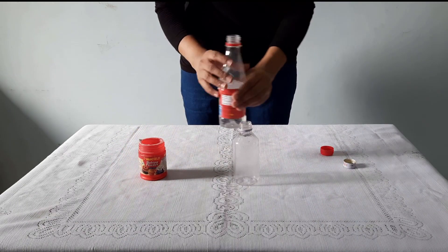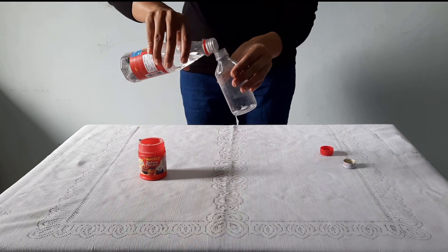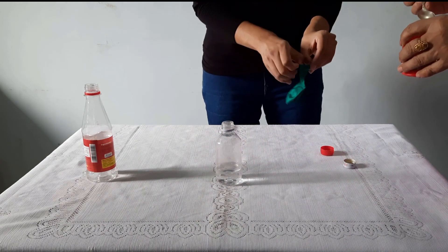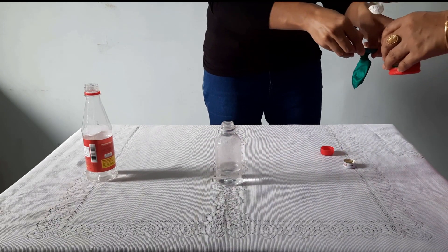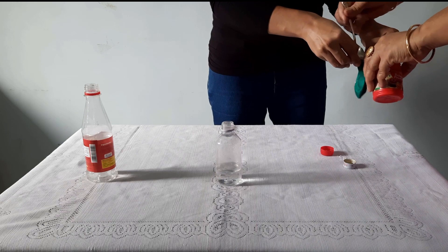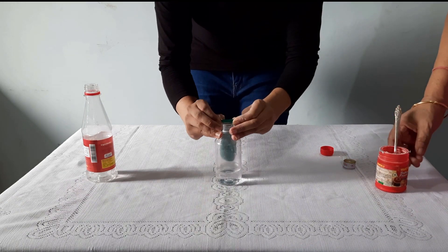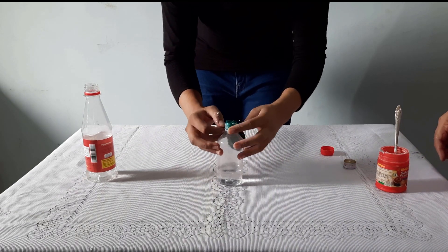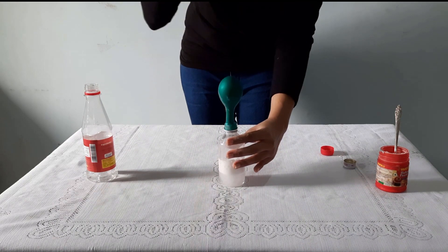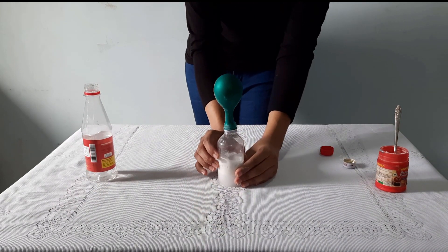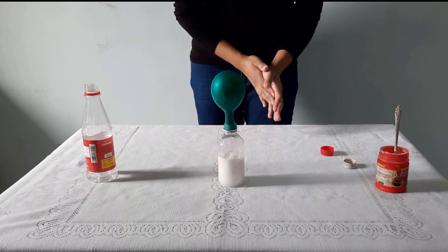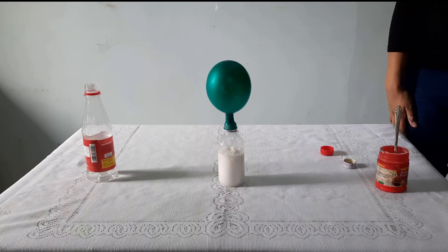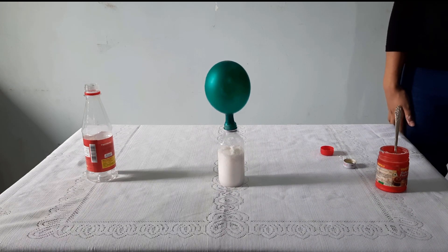Here, I have some baking soda and vinegar. Let me pour the vinegar into the bottle. And let's put some baking soda into a balloon. Now, let's see. You can see, the balloon is getting filled with some gas.